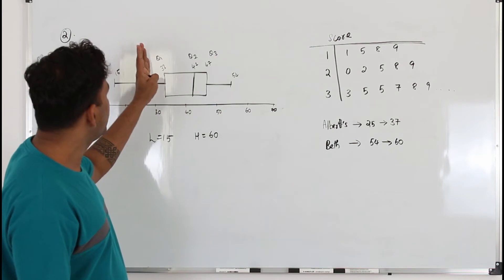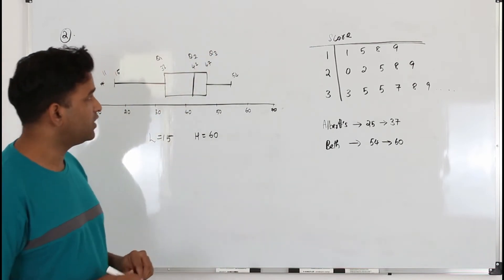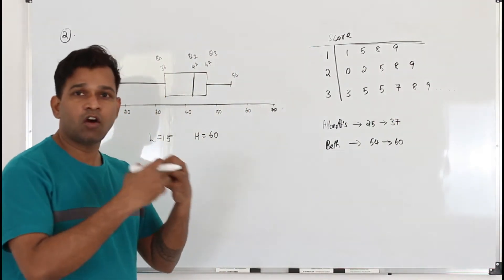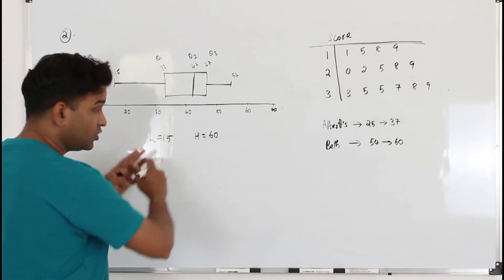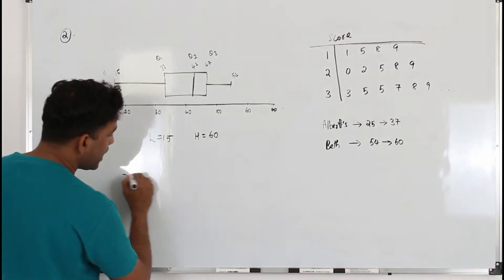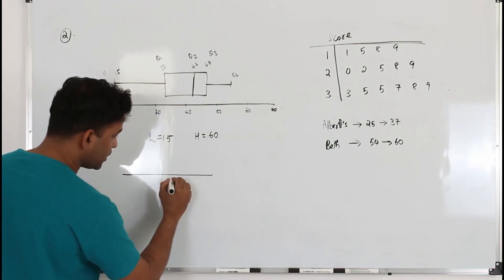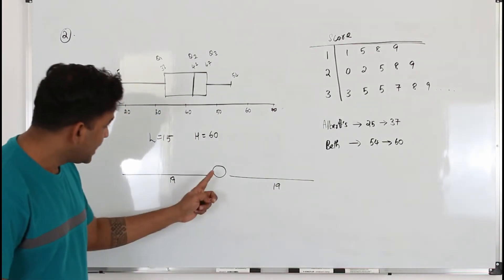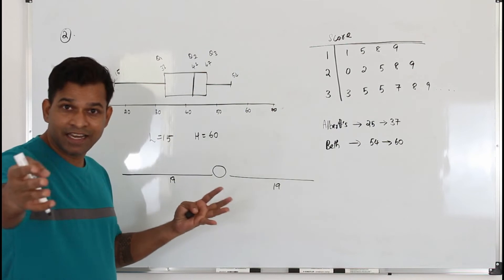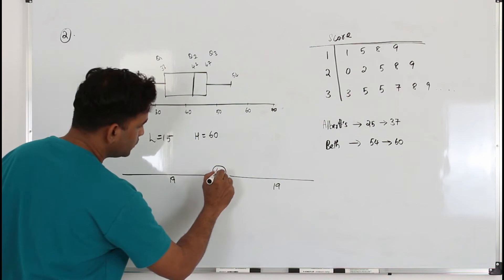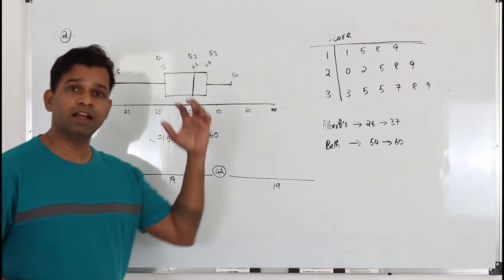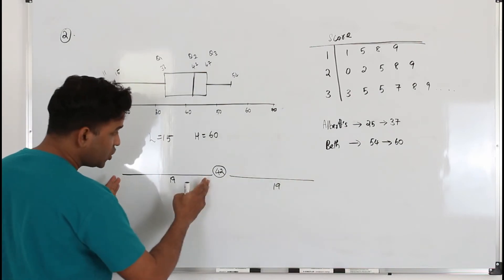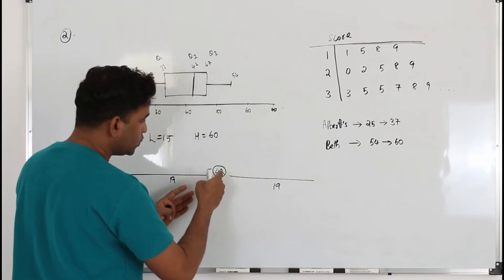Now we need to find Q1, Q2, and Q3. With 39 data entries written in ascending order, the middle value — the 20th entry — is Q2. Albert's changed score of 37 is still less than 42, so it remains on the left-hand side of the median. Therefore the total count and position of Q2 are unaffected, and Q2 remains 42.